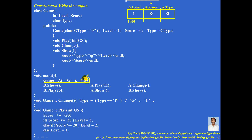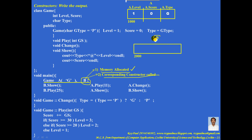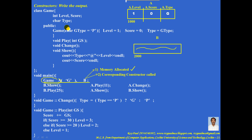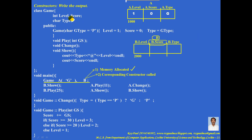Now B is another object of the class. When an object is encountered, two things are to be done: memory should be allocated, and the corresponding constructor should be called. Memory is allocated for B with a name, content, and some address. The content area is divided into three parts for the three data members — level, score, and type — giving us B.level, B.score, and B.type.